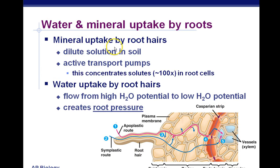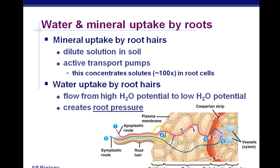Water and mineral uptake by the roots. Root hairs increase surface area, and at the root hairs we have active transport pumps, which allow the plant to concentrate solutes like nitrates — more than simple diffusion would allow. Water uptake by the root hairs follows high to low water potential, moving from higher concentration to lower concentration, and this causes root pressure. Root pressure is just a small push of water, but most of the reason water moves up the plant is not due to root pressure — that's a secondary reason. The primary reason is transpiration: the pull of water as a result of evaporation and cohesion and adhesion within the xylem.